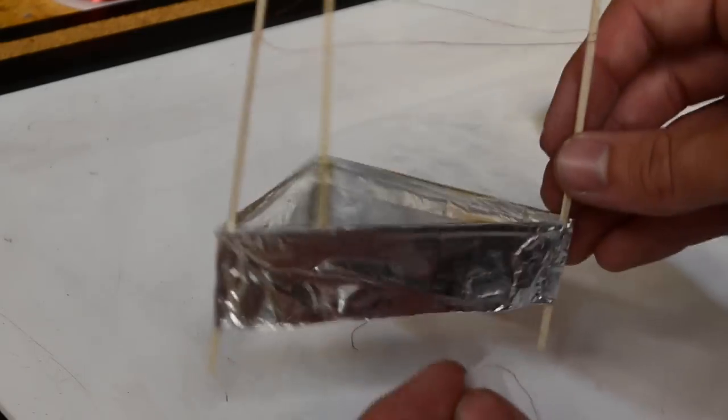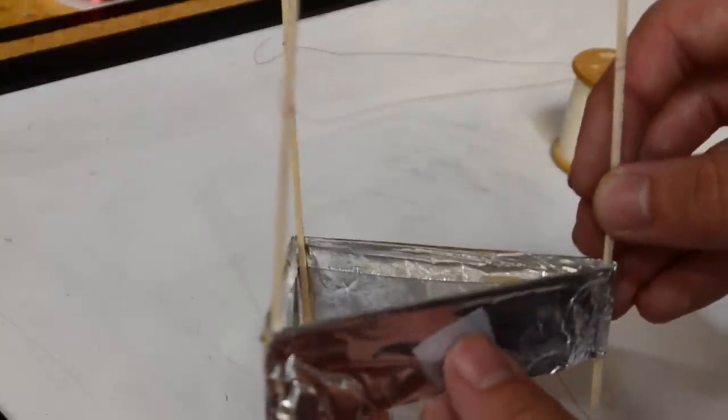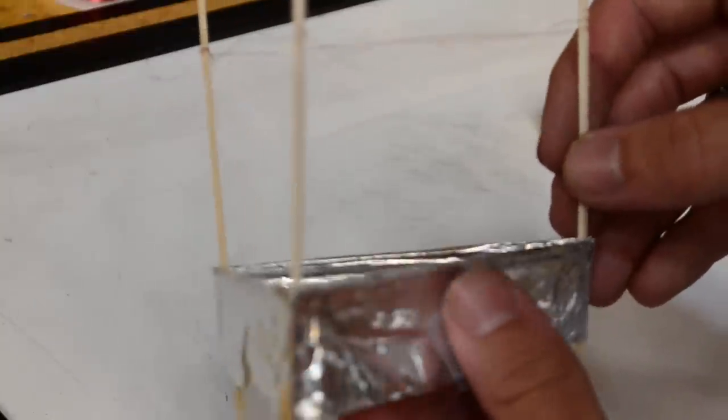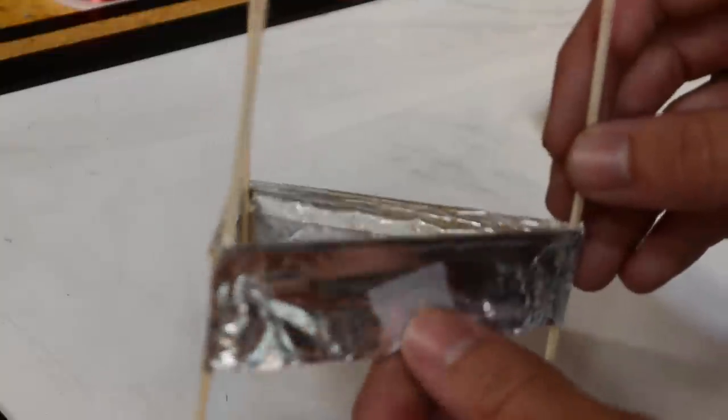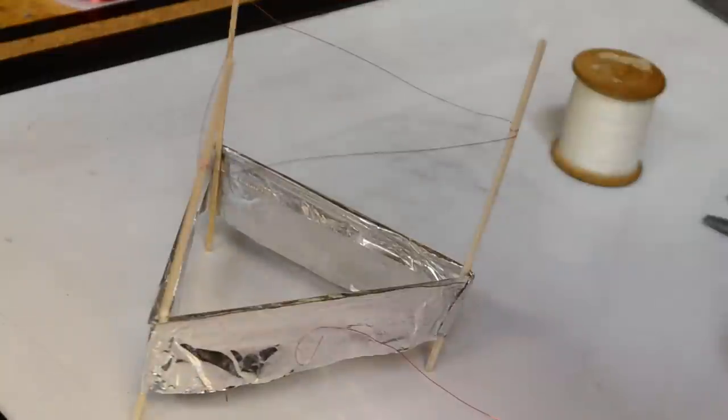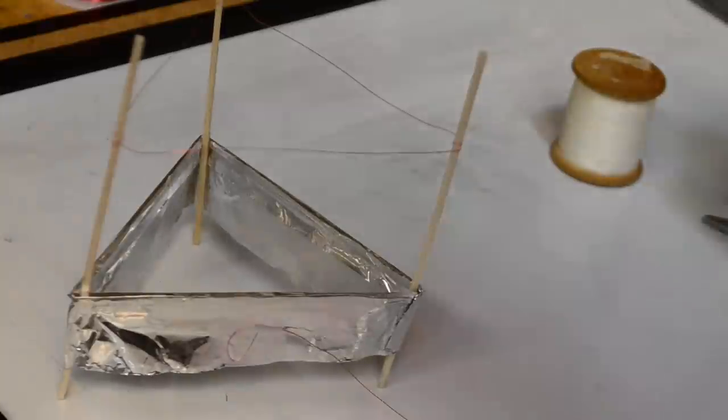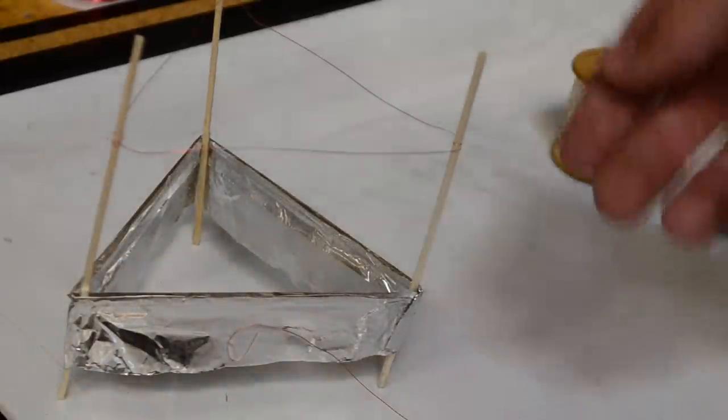The final thing we need to do is take a wire and connect it up to the aluminum skirt that wraps around it. I'm just going to use a little bit of scotch tape to do that. And there we go. So this wire is going to be what we connect the high voltage negative to, while this wire is going to be the high voltage positive. And with that final step done, our ion craft is complete.